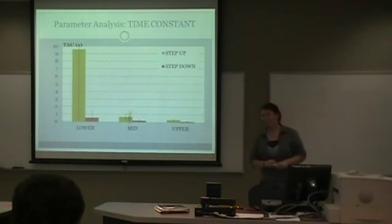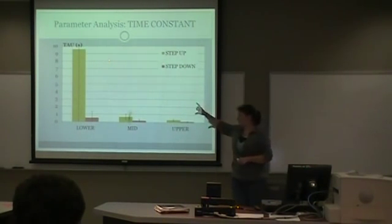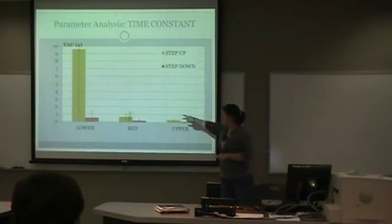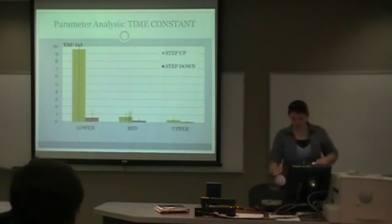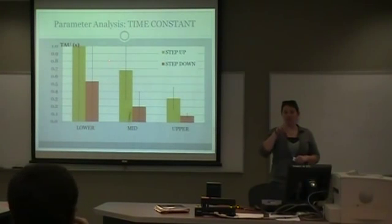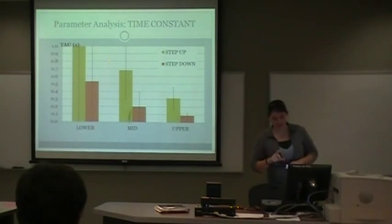For the time constant there is a huge variance. The lower range is about 905. The next slide I will zoom in to see those a little better. As you can see, for each of the step ups it does display a higher time constant than the step down.